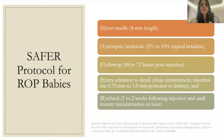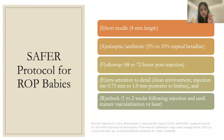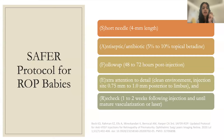The SAFER protocol for ROP babies (described by Beck et al.): S — Short needle (4 mm length); A — Antiseptic/antibiotic (5–10% topical betadine); F — Follow-up at 40–72 hours post-injection to assess retinal vascularization; E — Extra attention to detail (clean environment, injection site exactly 0.75–1 mm posterior to the limbus); R — Recheck at 1–2 weeks following injection, continuing until full retinal vascularization or until determining need for additional laser treatment.